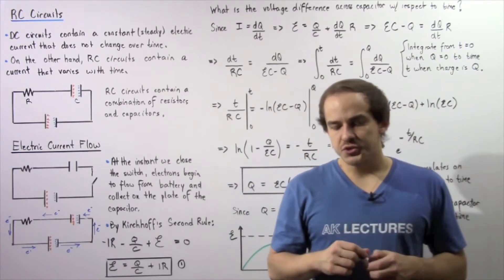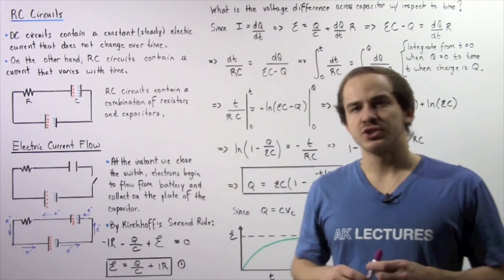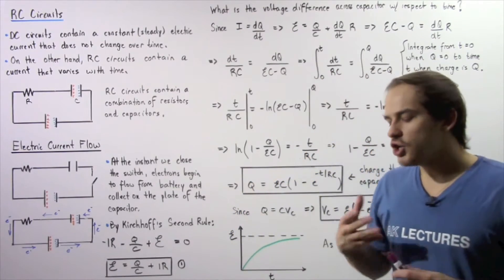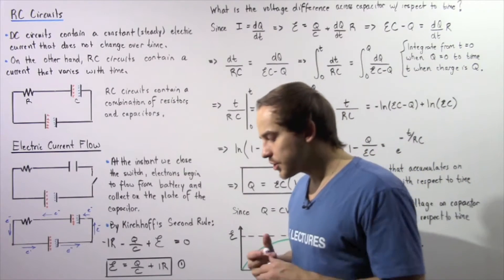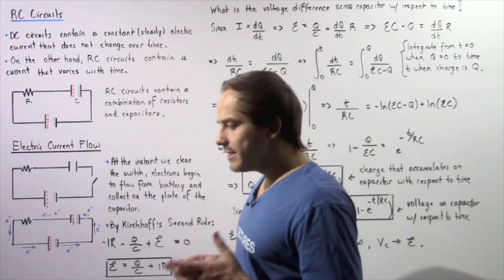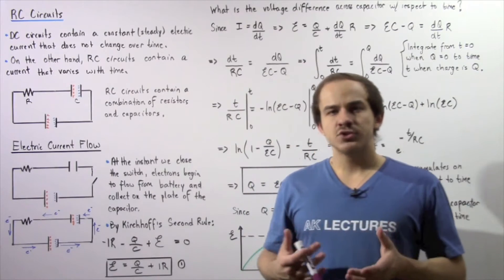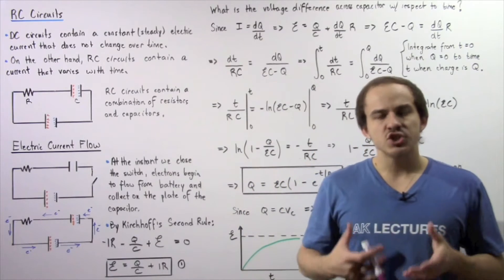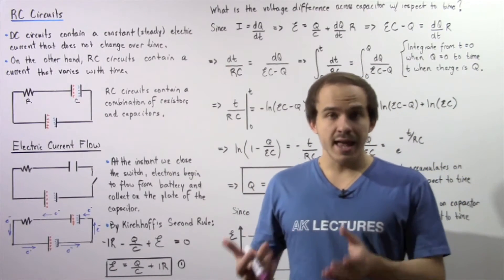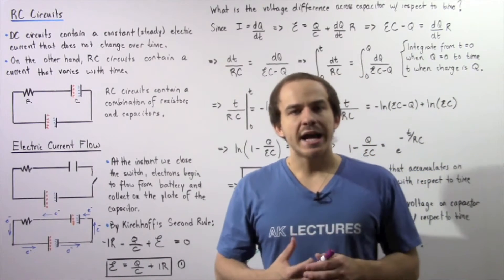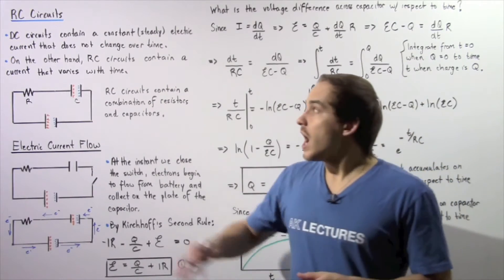As of now, we only really spoke about one type of electric circuit, known as a DC circuit. Inside a DC circuit, the electric current is always constant — it's steady — and that means it does not depend on time.